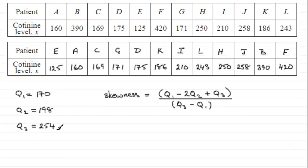And we've got our values here, we just need to substitute them into this equation. So what are we going to have? Well, we've got q1 then, so that's going to be 170 minus 2 times q2, 198, plus q3, so that's plus 254.